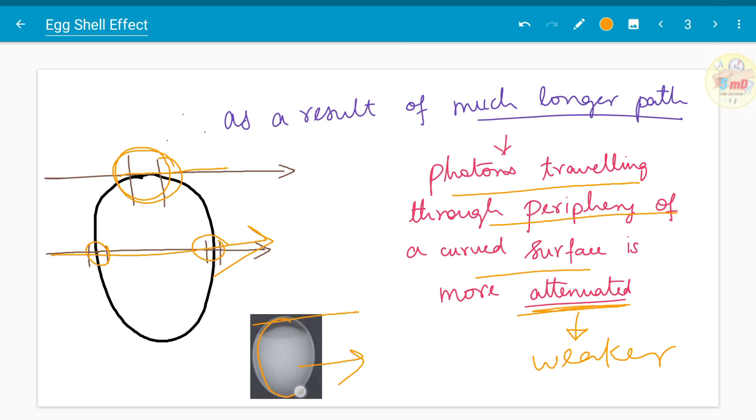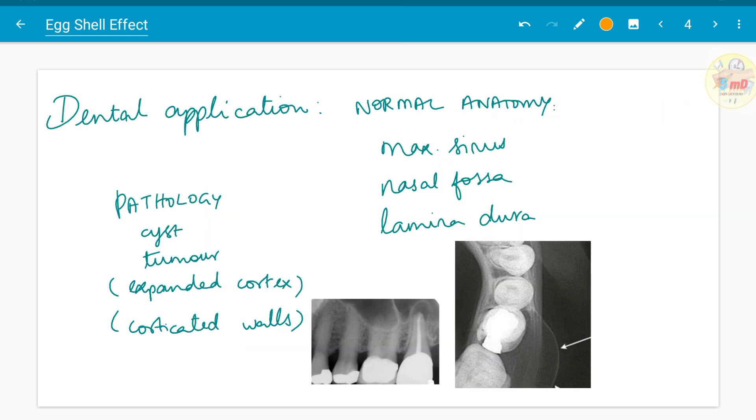That is the eggshell to be more thicker. As I said, the eggshell mimics the cortex, the expanded cortex in normal anatomy such as maxillary sinus, nasal fossa or lamina dura, and in pathology such as cysts or tumors where the corticated walls appear more thicker than the other parts.